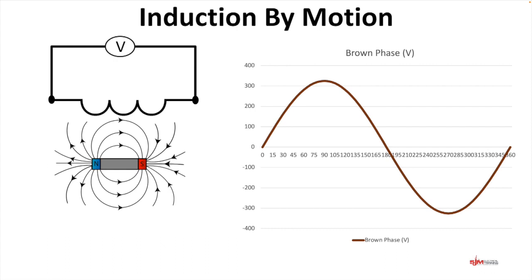So this is induction by motion. Examples of such? Generators and alternators. This is how all of our electricity, or the vast majority of our electricity, is actually produced.